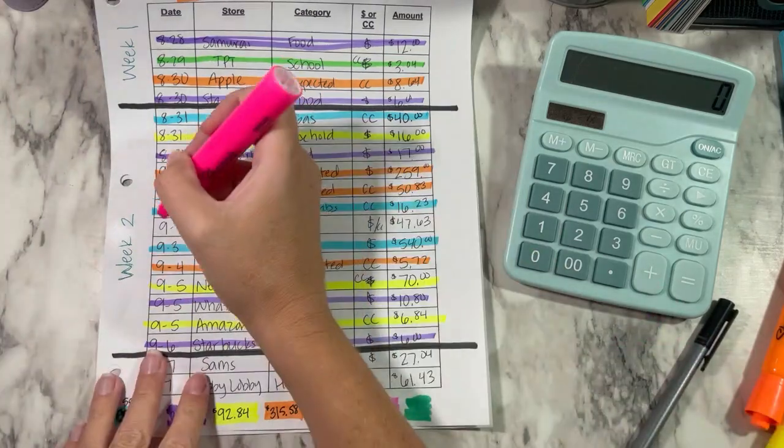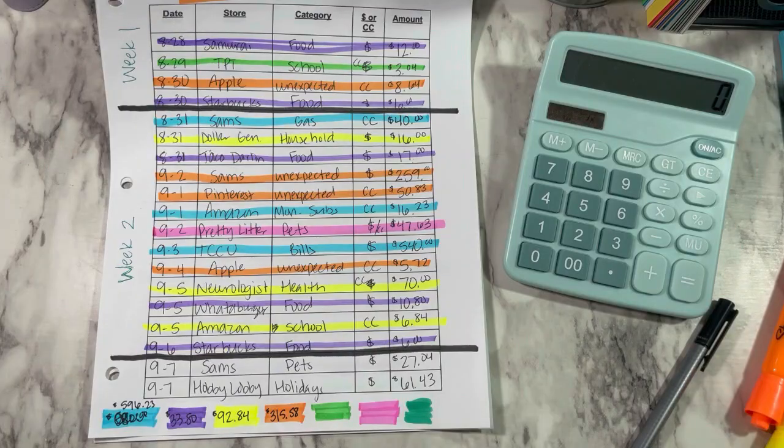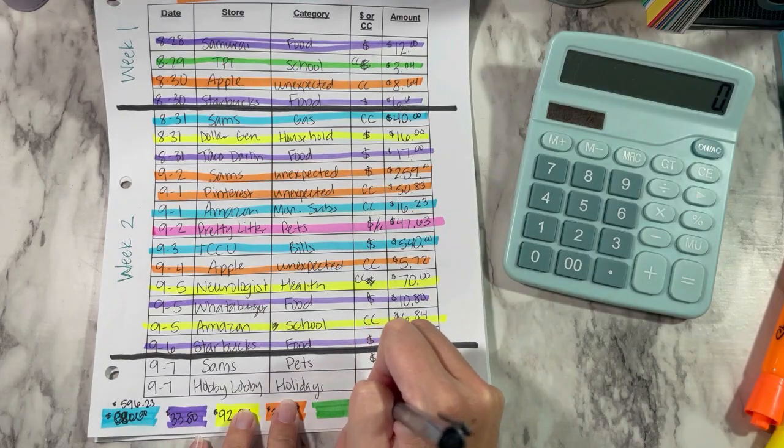Okay, and then pets. We had one pets here. And that was $47.63.